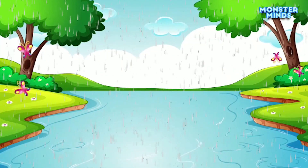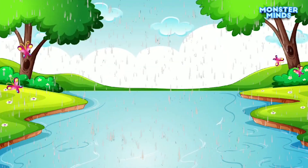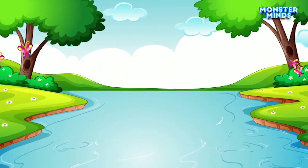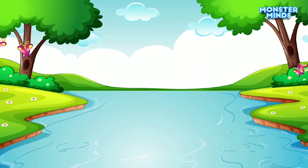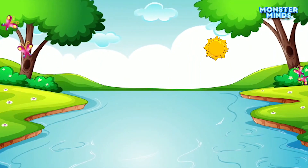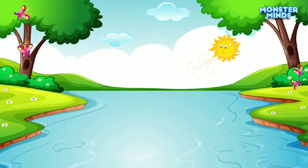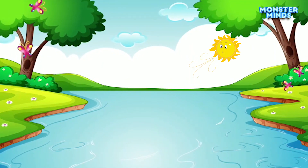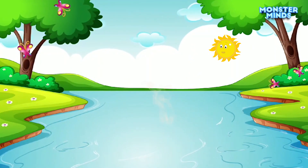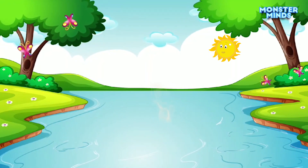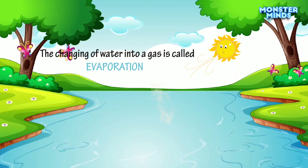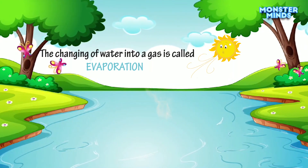Let's see how does the rain form. For that we need the sun. Here is the sun. When the sun shines, the heat of the sun warms the water, turning it into invisible gas called water vapor. The changing of water into gas is called evaporation.